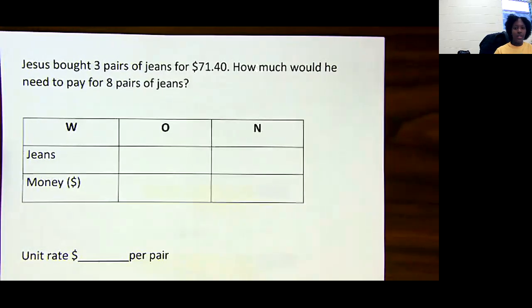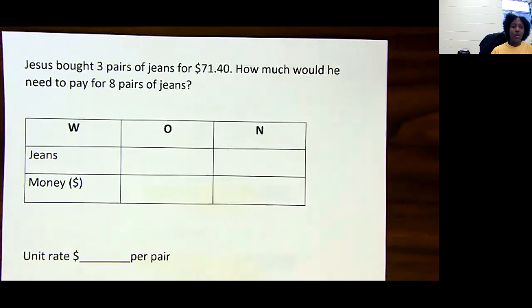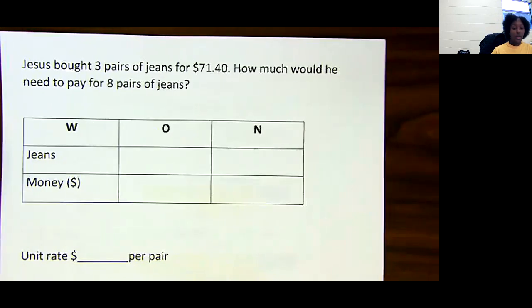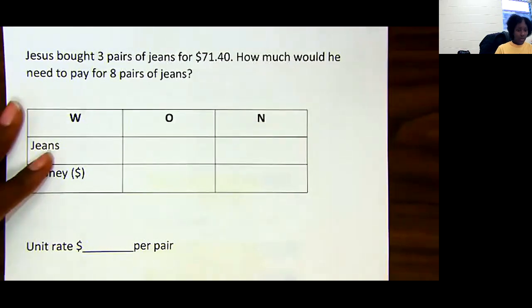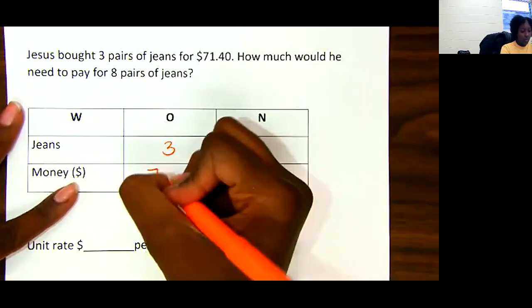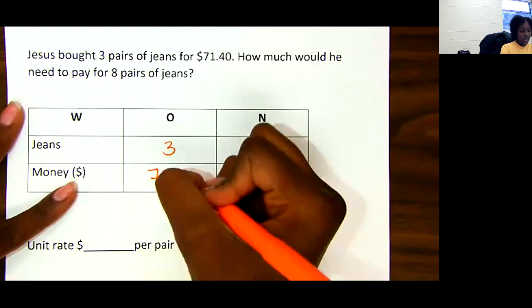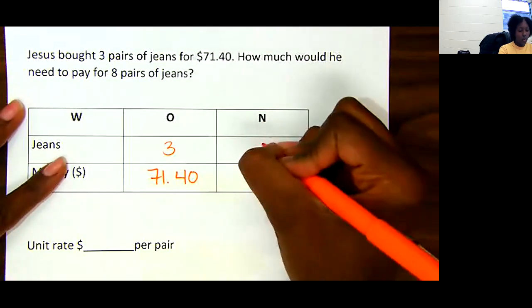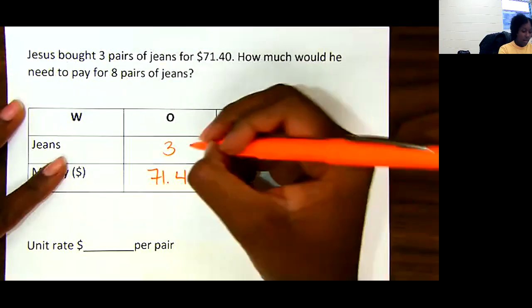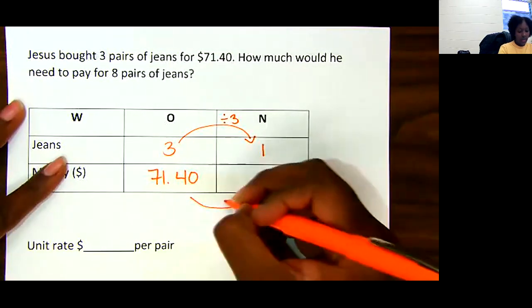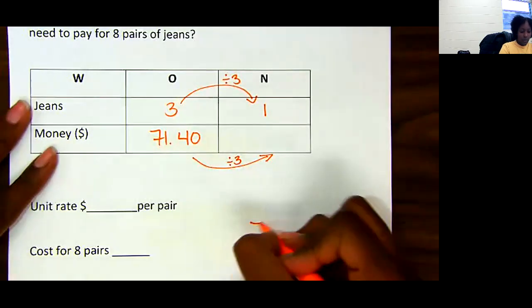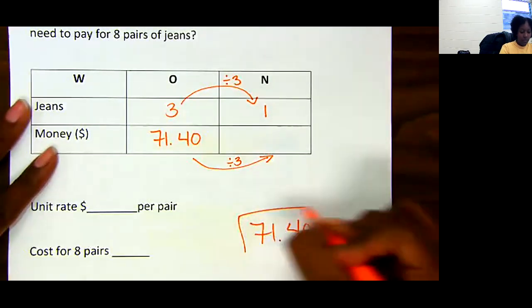Let's look at the next one. Jesus bought three pairs of jeans for $71.40. How much would he need to pay for eight pairs of jeans? So they have us doing two things here. We have to figure out how much one pair of jeans costs, so that way I can figure out how much eight pairs of jeans costs. So I'm going to be dividing and multiplying. Let's see. Three pairs of jeans, they told us that costs $71.40. We got to figure out how much for one pair of jeans. In order to get to 1, I divided by 3, so I need to do the same thing here.